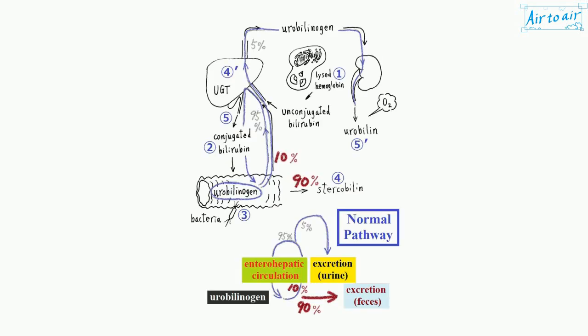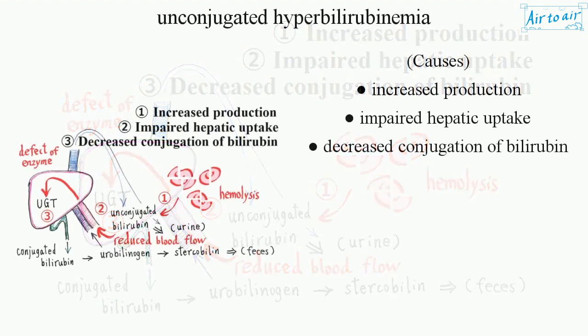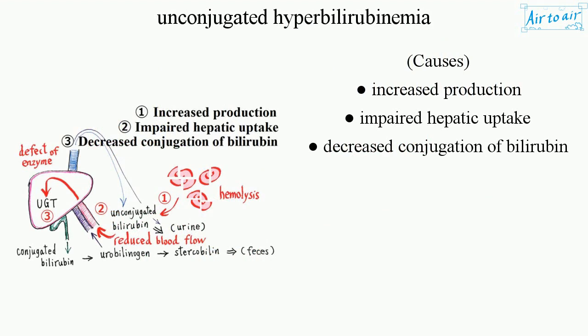Unconjugated hyperbilirubinemia is a condition defined as elevated unconjugated (indirect) bilirubin levels above the reference range, due to disorders of bilirubin metabolism. Causes include increased production, impaired hepatic uptake, and decreased conjugation of bilirubin.